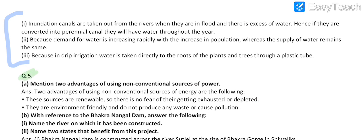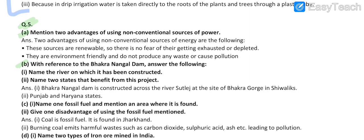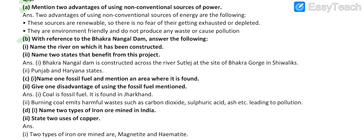Fifth question: Part A, Part B, Part C — C is having parts one and two. B is having parts one and two. D is having parts one and two.